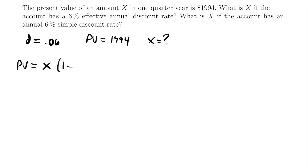The discount rate present value factor is going to be 1 minus D to the power of T, because this is an effective annual discount rate, which means it's compounded — not a simple discount rate, which is what we'll work with in the second part of this problem. We also need to know our time period. We see that the present value of an amount X in one quarter year is that amount, so T is equal to one fourth, which is a quarter of a year. Since our discount rate is an effective annual rate, it's important to keep our time in years so the period of our discount rate matches the units of our time.